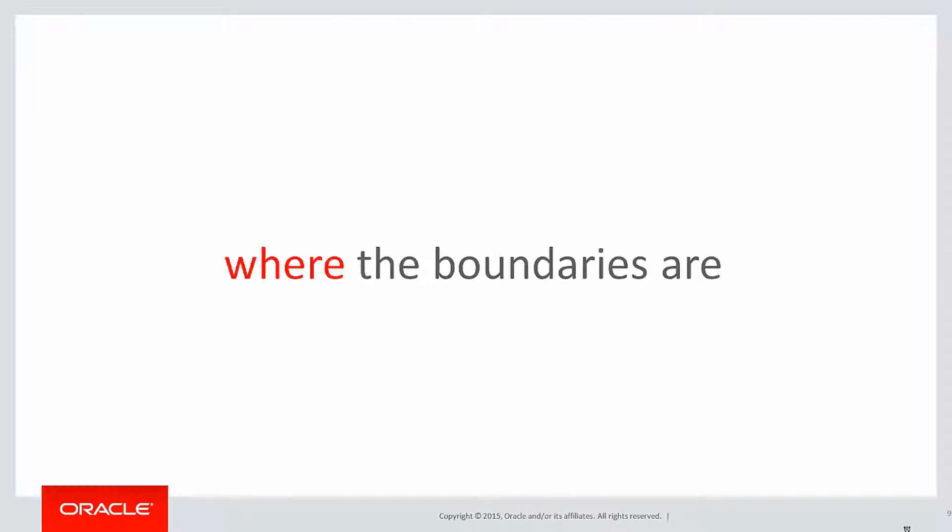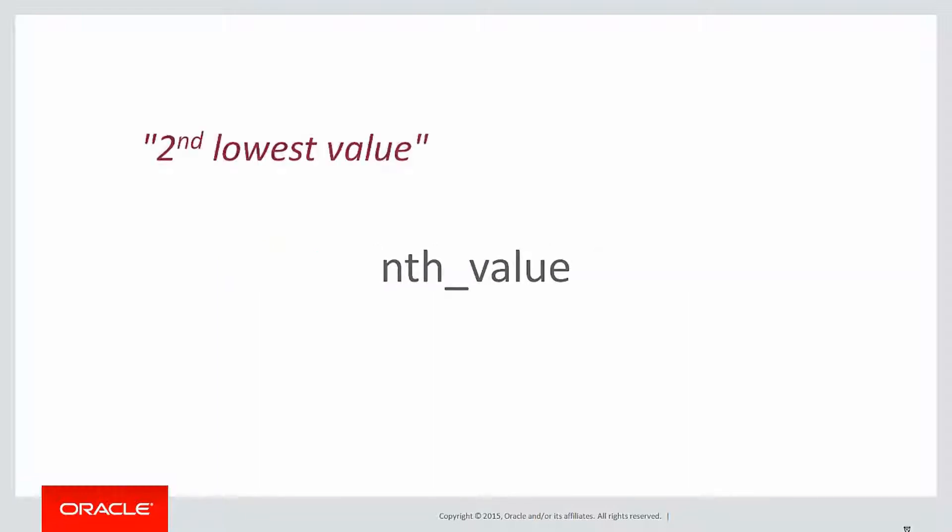A quick recap on the last lesson: we looked at where the boundaries are and how to explore within those boundaries. We looked at the nth_value function, and the reason that was important is sometimes we want to find not the lowest value, but the second lowest value in the window, or perhaps the third highest value in the window.